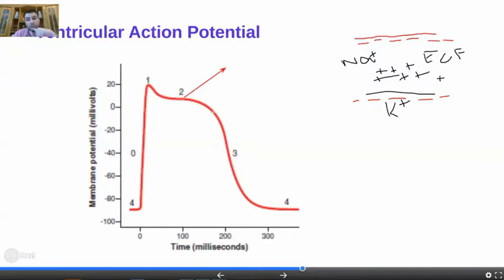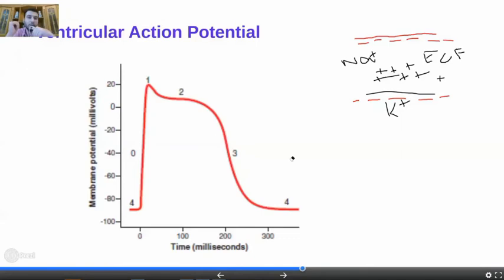Now let's go through each phase. An action potential has two components: depolarization and repolarization. Depolarization means the interior negativity changes — the interior becomes positive. Repolarization means the excitable tissue returns to its resting membrane potential, back to negativity inside. So: action potential = depolarization + repolarization.